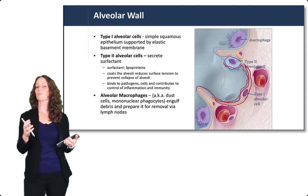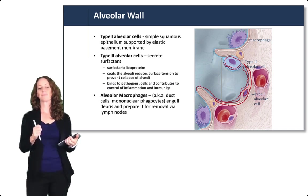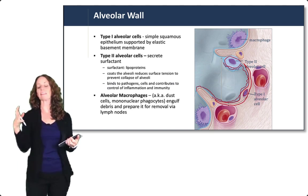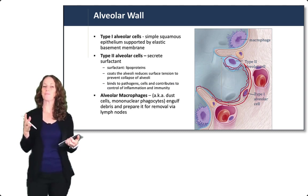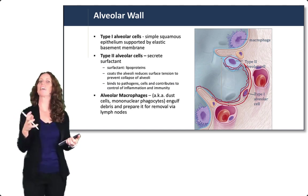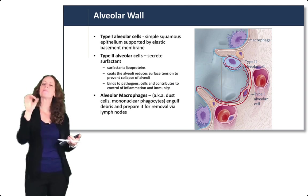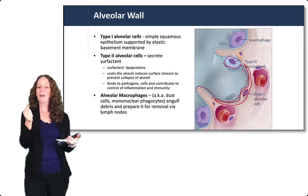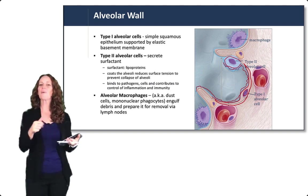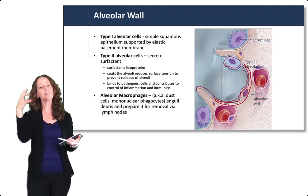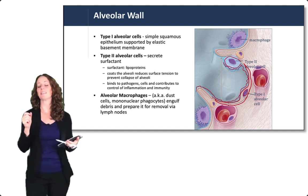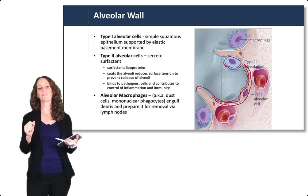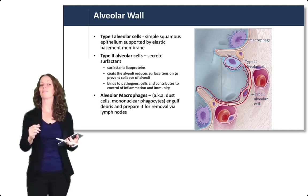Surfactant also binds to pathogens and contributes to control of inflammation and immunity. Without surfactant, it is very difficult to inflate the alveoli. Think of trying to blow a bubble: you cannot blow a bubble with plain water because the surface tension is too high, but adding soap — lipids — reduces that surface tension so you can blow a bubble. Surfactant does exactly that, reducing surface tension to allow the air sacs to open more easily.